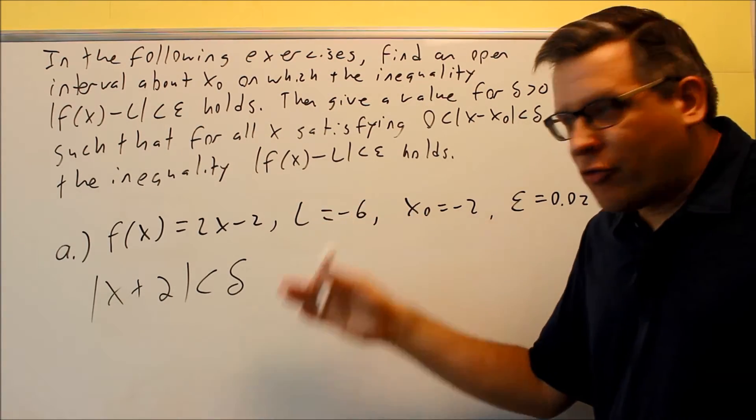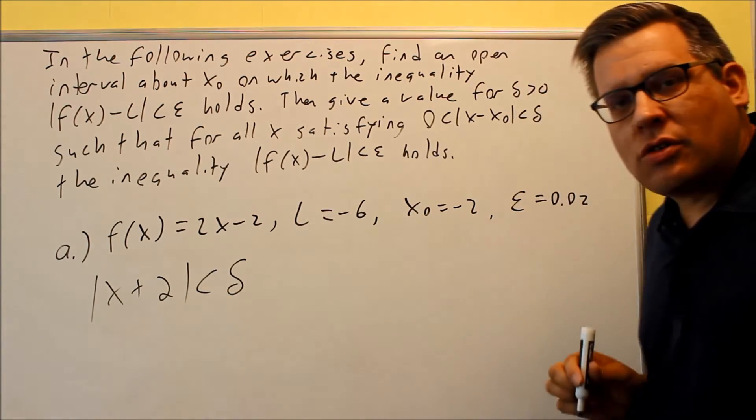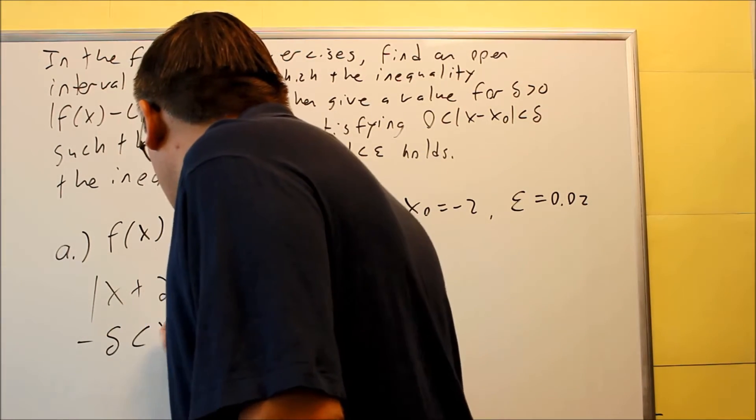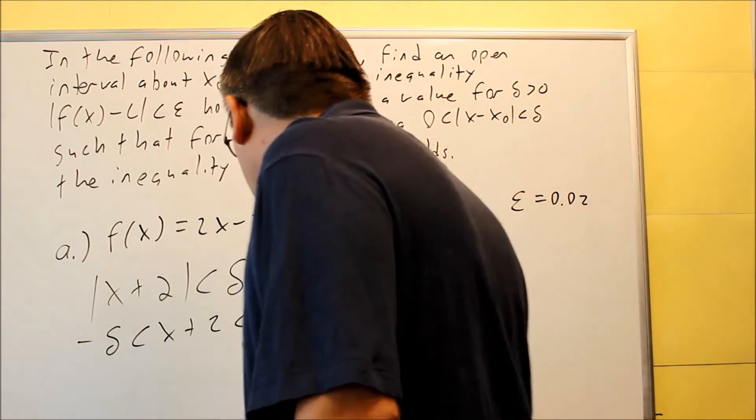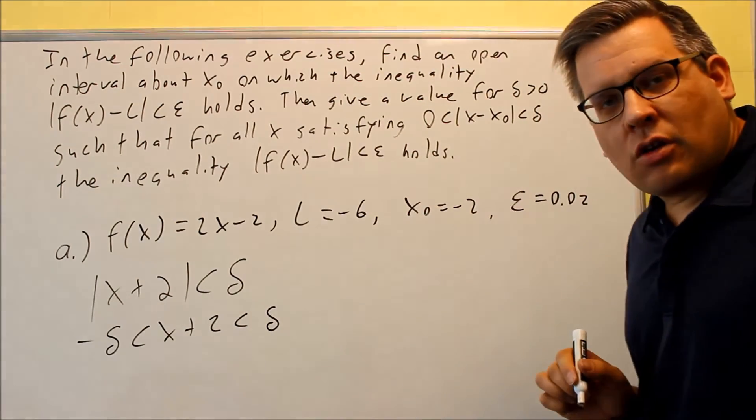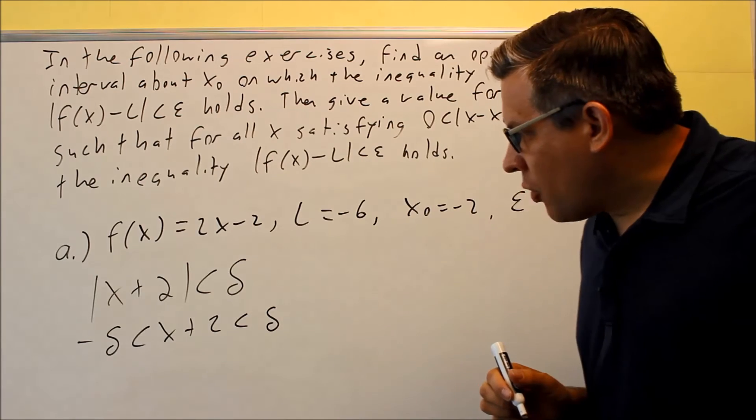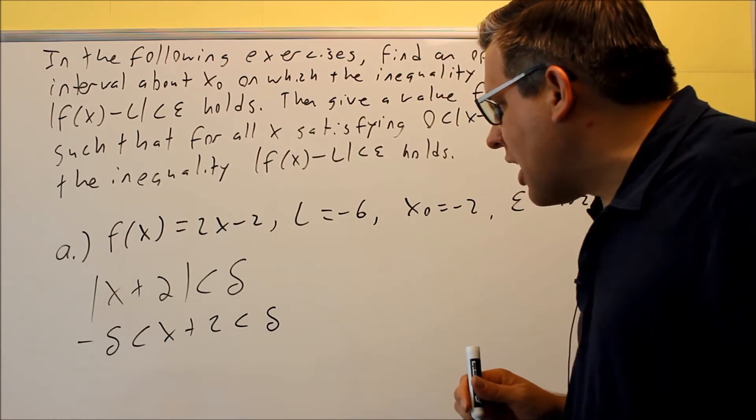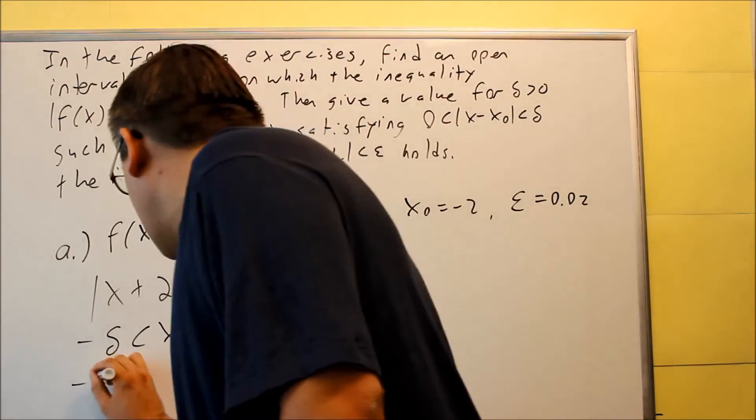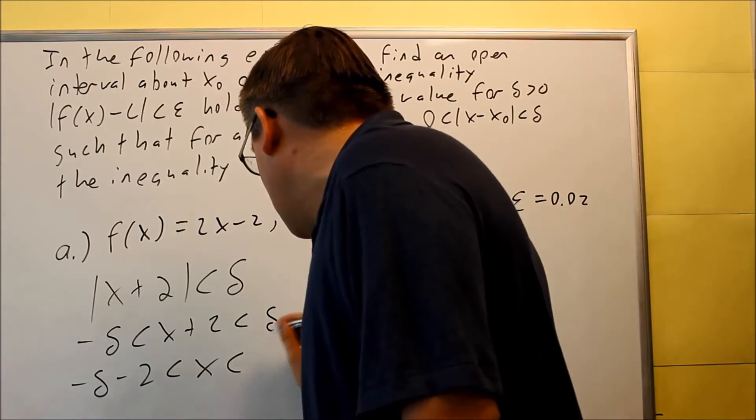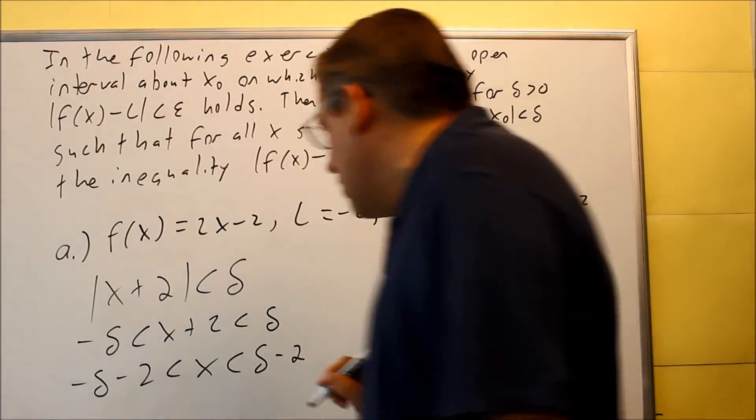Like the problem we did before, we're going to turn this into an inequality. So I have negative delta less than x plus 2 less than delta, and I want to once again solve for x. So I'm going to subtract 2 from both sides. If you do that, subtract 2 from both sides, then what you're going to get is negative delta minus 2 less than x is less than delta minus 2.